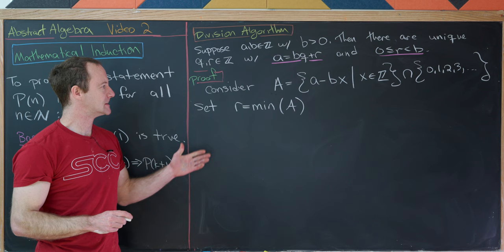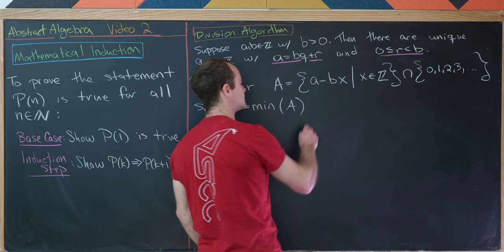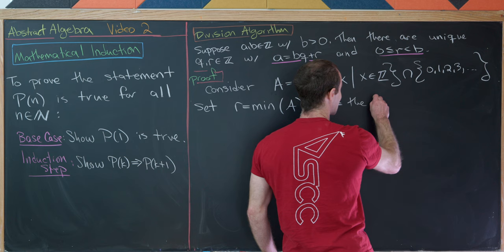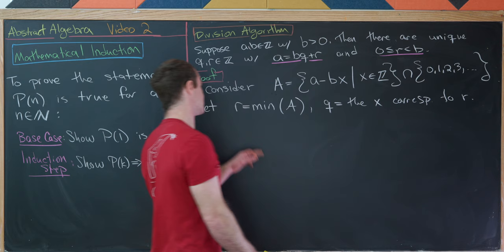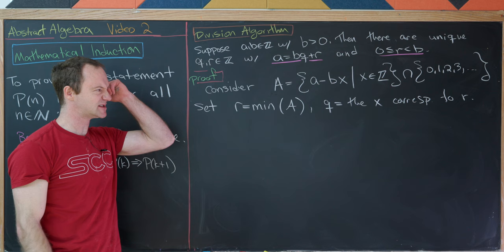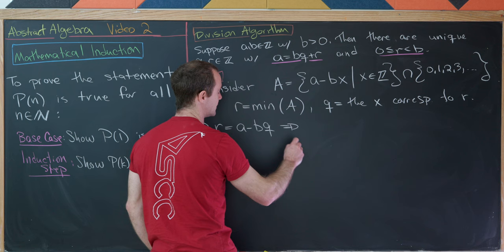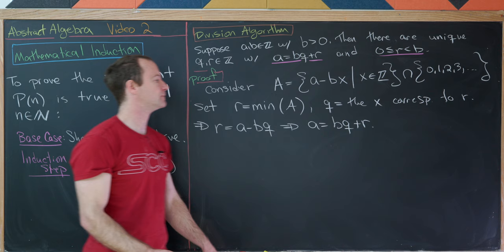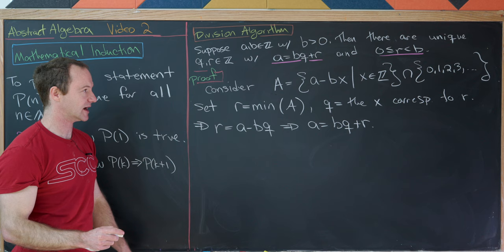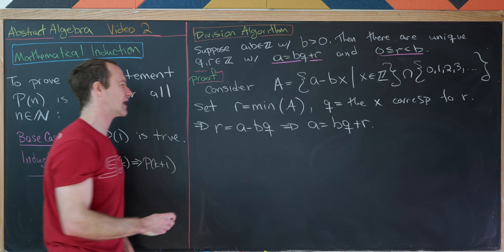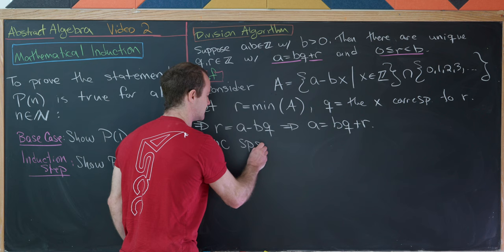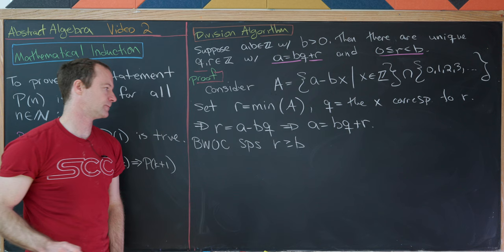We now need to show R is the right size — between 0 and B. We'll do that by contradiction: suppose R ≥ B. Then we can write R = B + M where M ≥ 0. Substituting back, B + M = A − B·Q, which gives M = A − B(Q+1). But notice that M is an element of the set A, and since B > 0, M is strictly less than R.